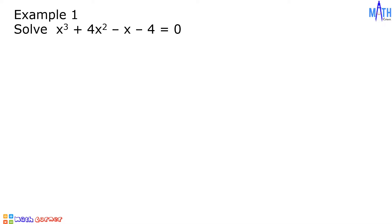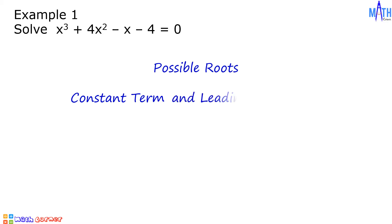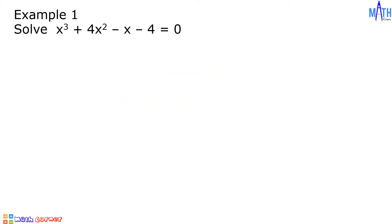Our first step, let us find the list of possible roots of this polynomial equation. Let us identify the constant term and the leading coefficient. The constant term is negative 4, it is denoted by p, and the leading coefficient is positive 1, it is denoted by q.